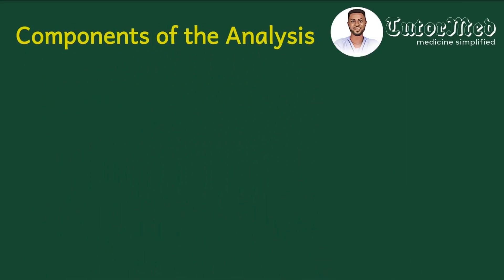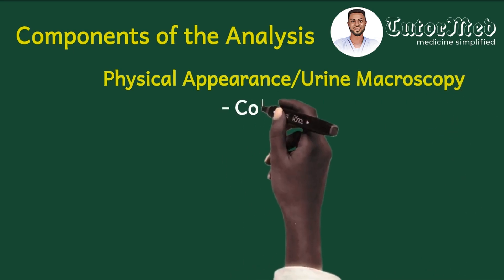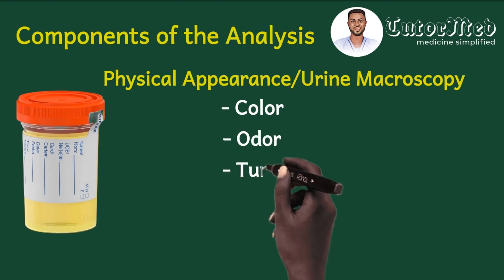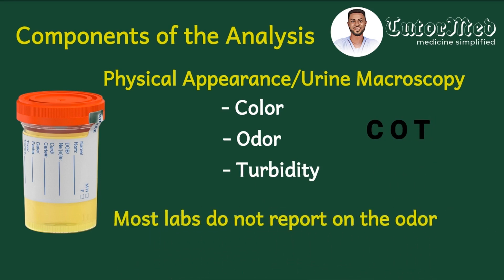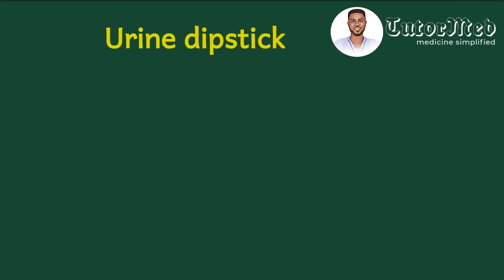Now, having understood the basic sciences, let's look at the components of urinalysis. There are typically three. The first is physical appearance or urine macroscopy. The first parameter there is urine color — you pick the urine and observe the color, noting if it is abnormal. Then the next parameters are odor and turbidity. The acronym here is COT. Most labs do not report on odor, and the perception of odor is very subjective. In our next video we will look in detail at the physical appearance or urine macroscopy.